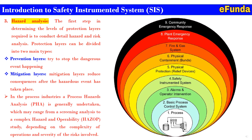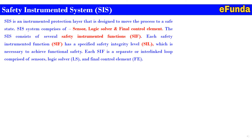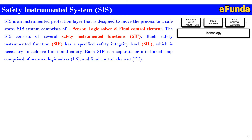In the process industry, a process hazard analysis (PHA) is generally undertaken, which may range from a screening analysis to a complex hazard and operability study (HAZOP), depending on the complexity of the operations and the severity of the risk involved. The SIS is an instrumented protection layer designed to move the process to a safe state. This system comprises a sensor, logic solver, and final control element, as shown in the block diagram.